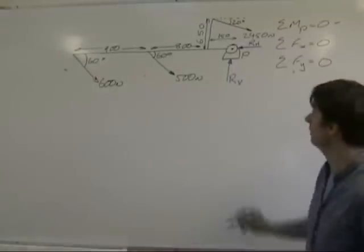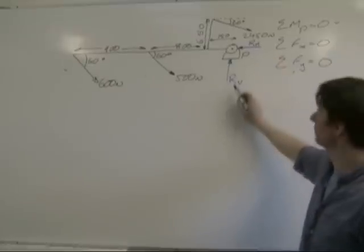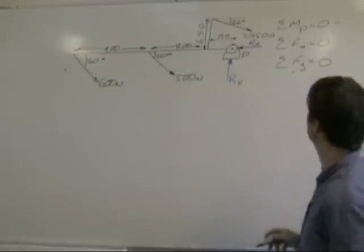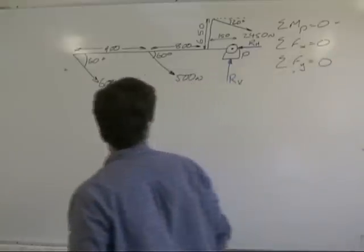Now we want to find the horizontal reaction from the tractor and the vertical reaction from the tractor. We're going to use, first of all, the sum of the forces in the x direction.